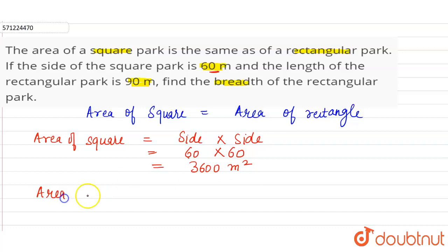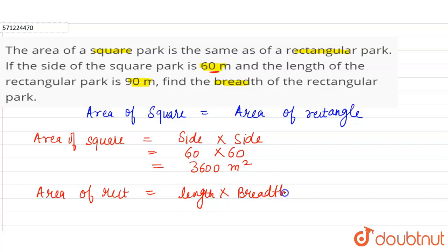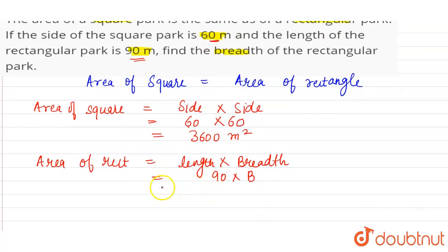For calculating the area of rectangle, the formula is length into breadth. The length is given as 90 meters, and we have to find the breadth of the rectangular park. So area of rectangle equals 90 into breadth.